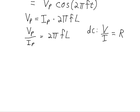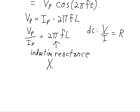In DC, we call that the resistance. In AC, we call this the reactance — specifically the inductive reactance. We give inductive reactance the symbol X sub L, to indicate that it's inductive. So the inductive reactance X sub L is equal to 2πFL.